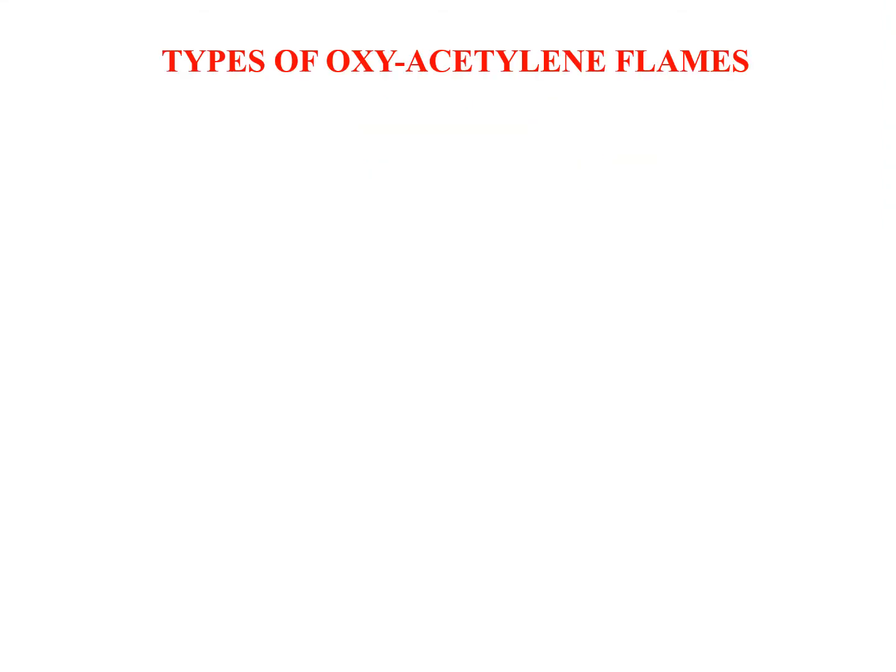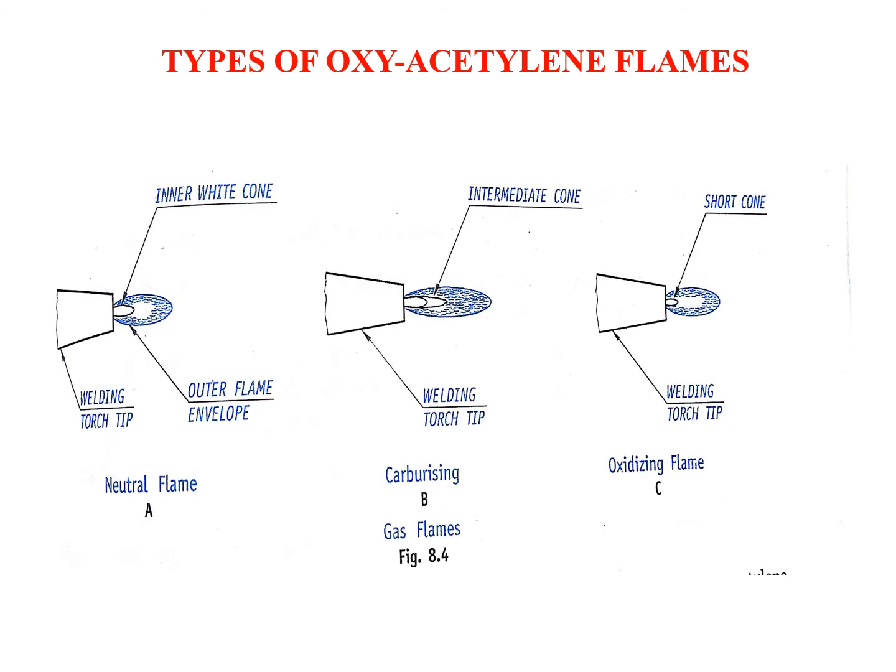To start with oxyacetylene flames. In figure number 8.4 we can see three different flames which are formed by varying the percentage of oxygen and acetylene. For the complete combustion of acetylene, 2.5 volumes of oxygen are required for one volume of acetylene. In practice, the ratio of oxygen to acetylene, referred to as the gas ratio, varies from 0.95 to 1.5. Depending on the gas ratio we have neutral flame, oxidizing flame, and carburizing or reducing flame.